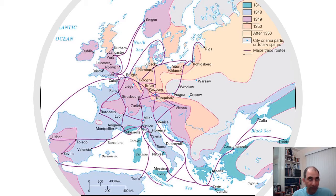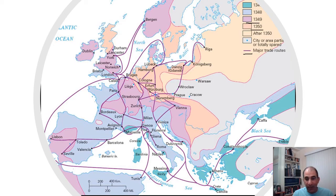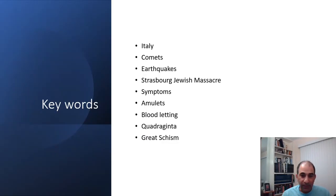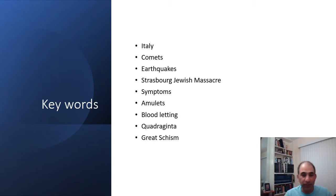The fact that Eastern Europe was less impacted will become somewhat important in a later lecture when we discuss different monarchies developing in modern Western civilization. We can see an image of the type of flea that was likely on the rats, which were on the ships, which eventually caused the bubonic plague to spread throughout Western Europe.